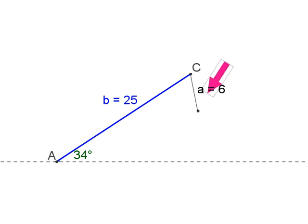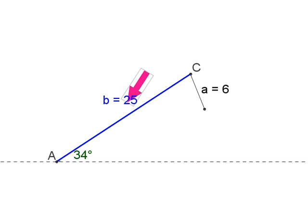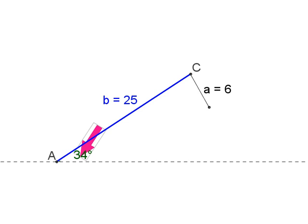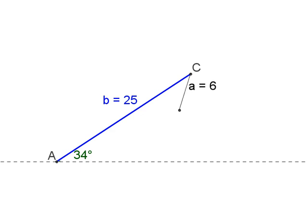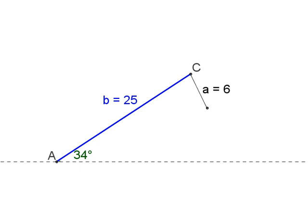Here's an SSA case: I have a side, right next to it another side, and then an angle — so SSA is what we've got. In this case, little a is too small to reach the ground, so we don't actually have a triangle at all.